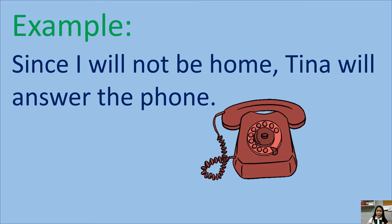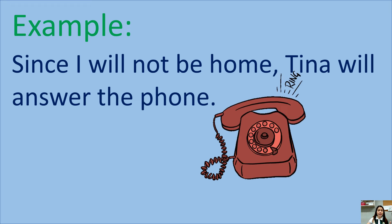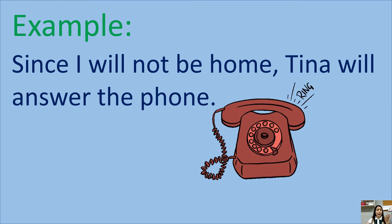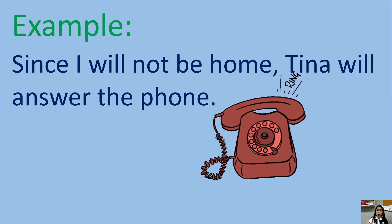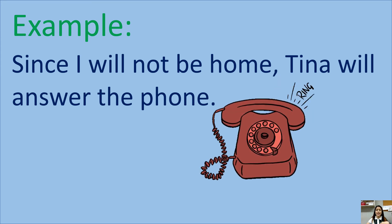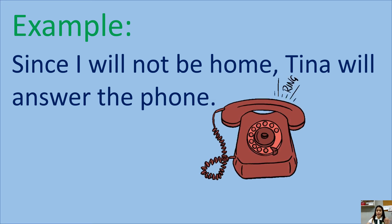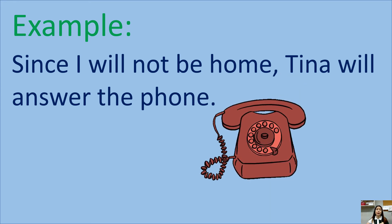Example: 'Since I will not be home, Tina will answer the phone.' There is a comma because 'since I will not be home' is a dependent clause — it doesn't make sense by itself. It is dependent on the rest of the sentence for meaning. 'Tina will answer the phone' is a complete sentence and an independent clause. On the other hand, 'since I will not be home' is incomplete. You can also see the use of subordinating conjunction 'since,' and because it starts the sentence, you add a comma after the dependent clause.